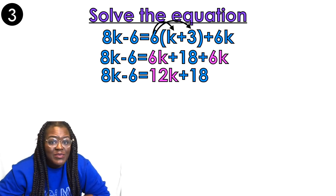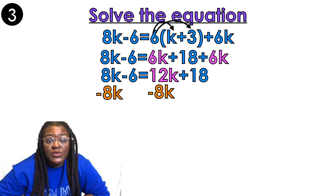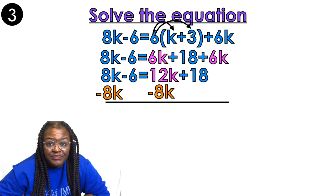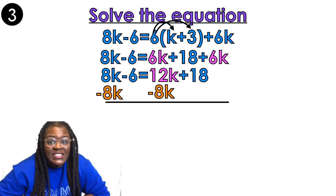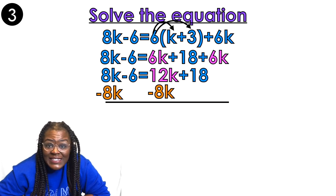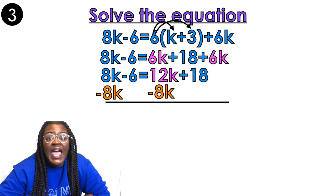I'm going to move the 8k to be with the 12k. It's a positive 8, so I'm going to subtract 8k on both sides. The negative 6 comes down, 12 minus 8 is 4k, and I bring the 18 down because I didn't do anything to the 18. Now I'm going to move the constants away from the variable — I'm moving the 18 to be with the negative 6 because the 18 is on the same side of the equation as the k.